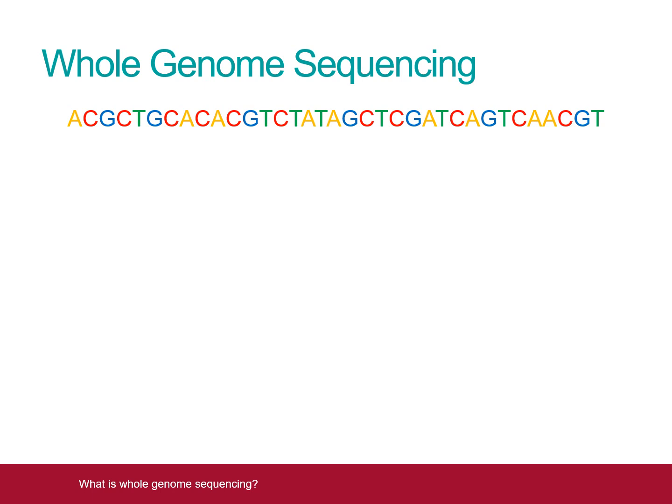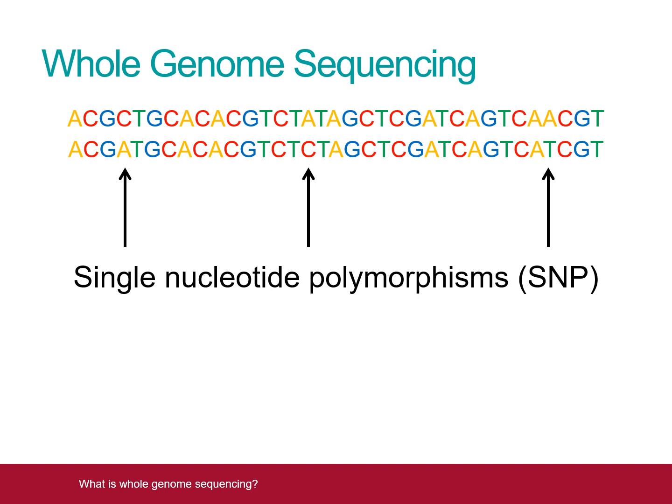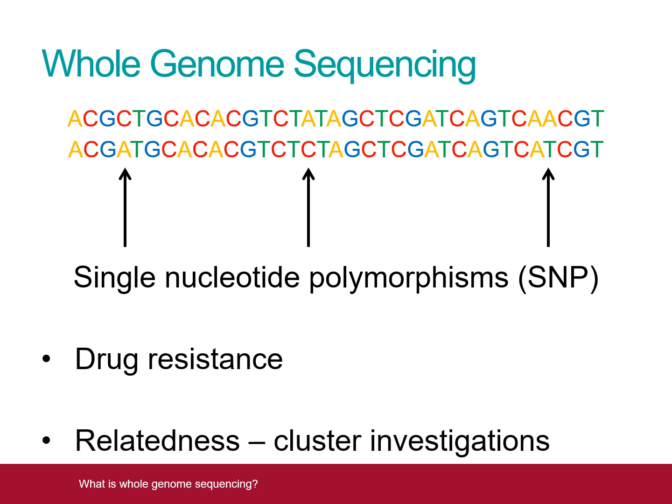Once a clinical isolate is identified as Mycobacterium tuberculosis, WGS allows the detection of single base changes in the DNA. These changes are known as single nucleotide polymorphisms, or SNPs for short. The analysis of these SNPs forms the basis of both drug resistance prediction and the relatedness analysis that underpins investigation of clusters of TB cases.